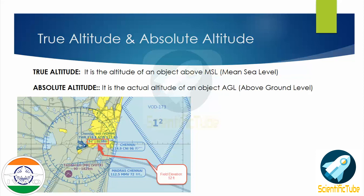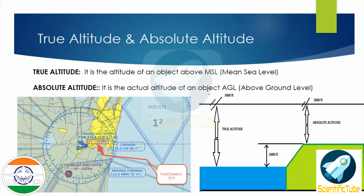Let's have a look at this chart. This is Chennai International Airport. The elevation of this airport is 52 feet above mean sea level. If an aircraft is on the ground, the true altitude of that aircraft is 52 feet, but the absolute altitude of that aircraft is 0 feet.